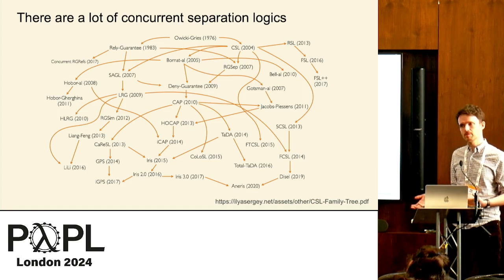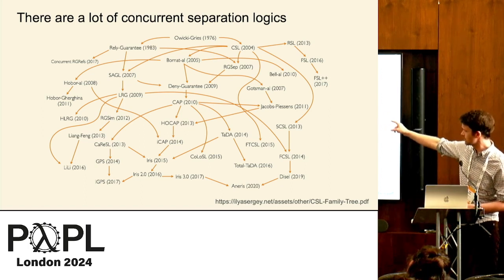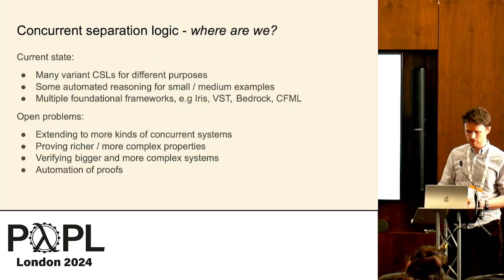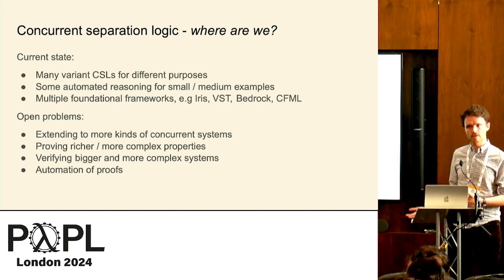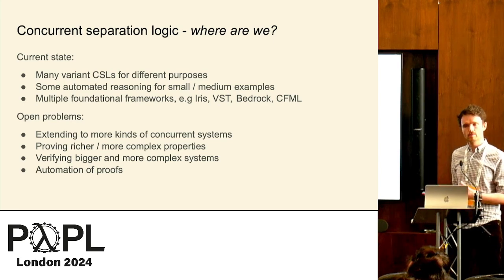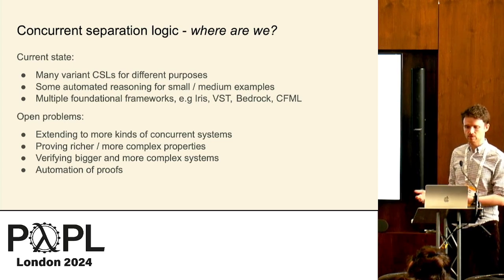There are a lot of concurrent separation logics — people like making up separation logics. There are a large number because we don't know the right abstraction yet for dealing with concurrent programs, and they have different purposes for different types of systems. Some automated reasoning works on small and medium examples, and we have multiple foundational frameworks like IRIS, VST, Bedrock, and CFML that give you access to separation logic reasoning in Coq or other frameworks.